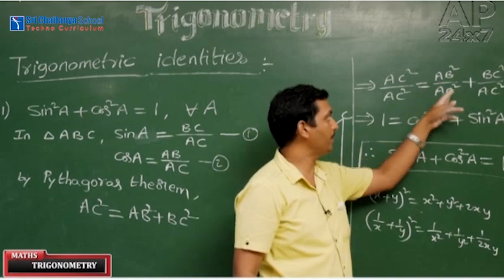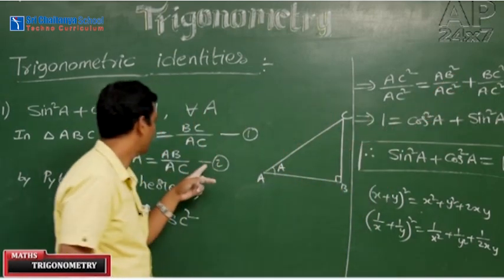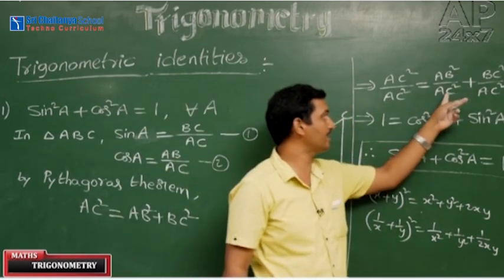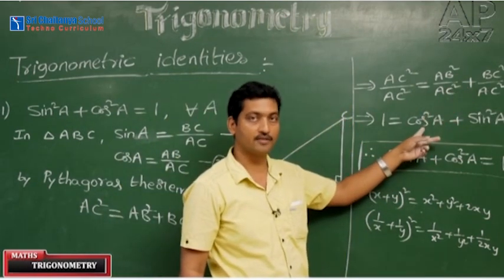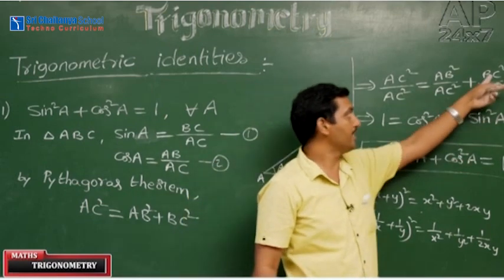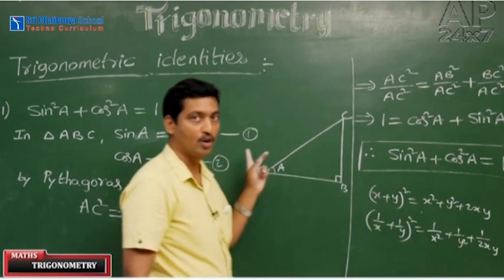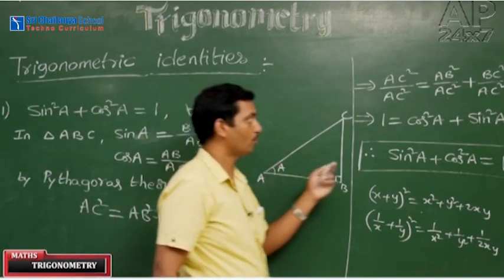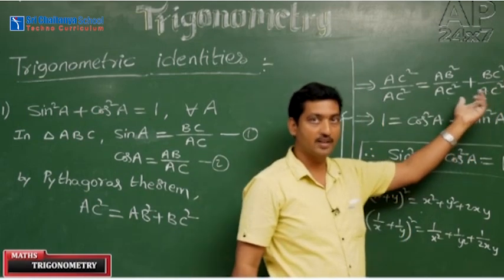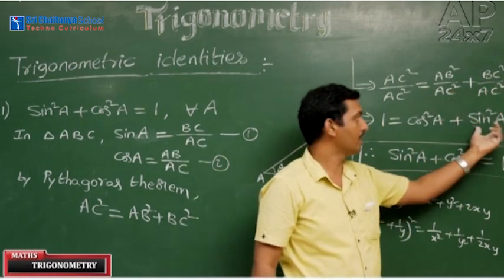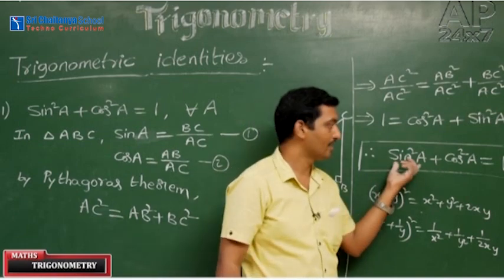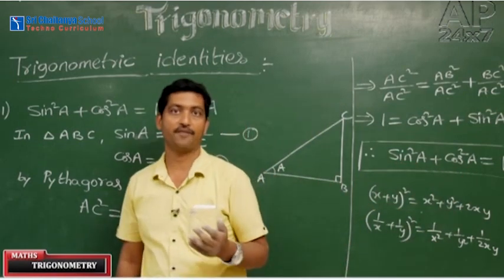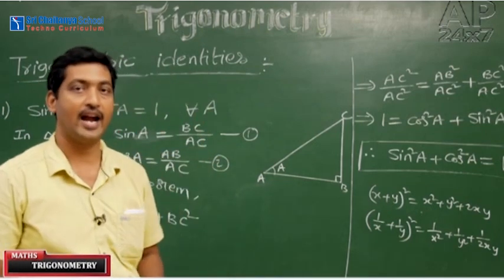Then we get 1 = (AB/AC)² + (BC/AC)². From the definitions, AB/AC is cos A, so that becomes cos²A. BC/AC is sin A, so that becomes sin²A. Finally, we get sin²A + cos²A = 1. This is the first identity in trigonometric identities.